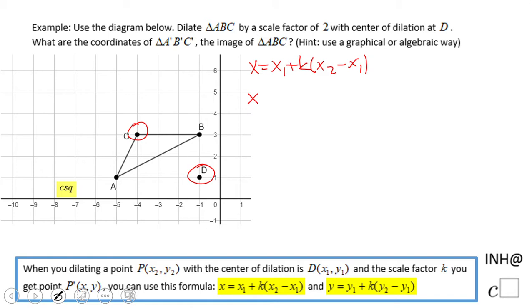x is the x coordinate of point C. x₁ is the x coordinate of the center of dilation, which in this case is D at (-1, 1). So x₁ is -1. The scale factor k is 2, as given.